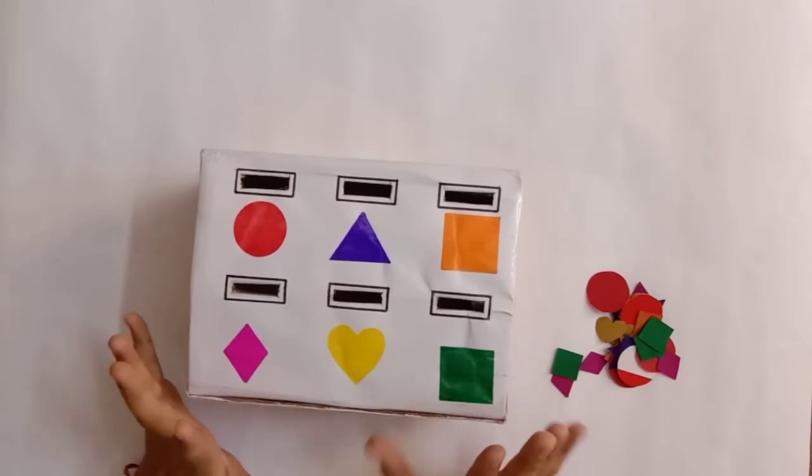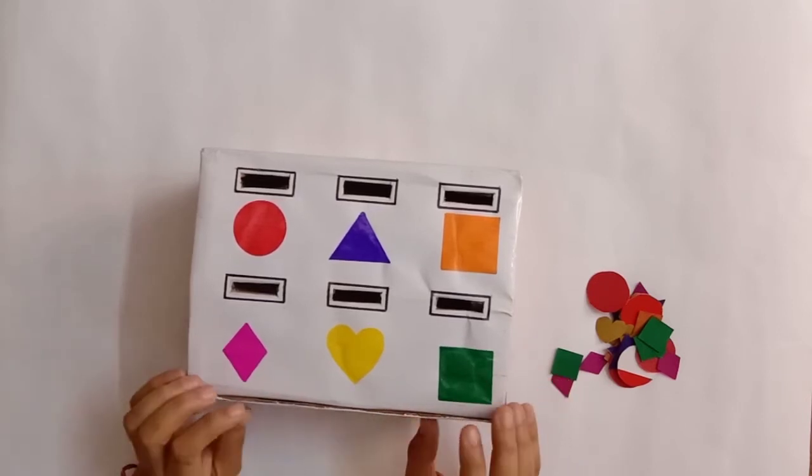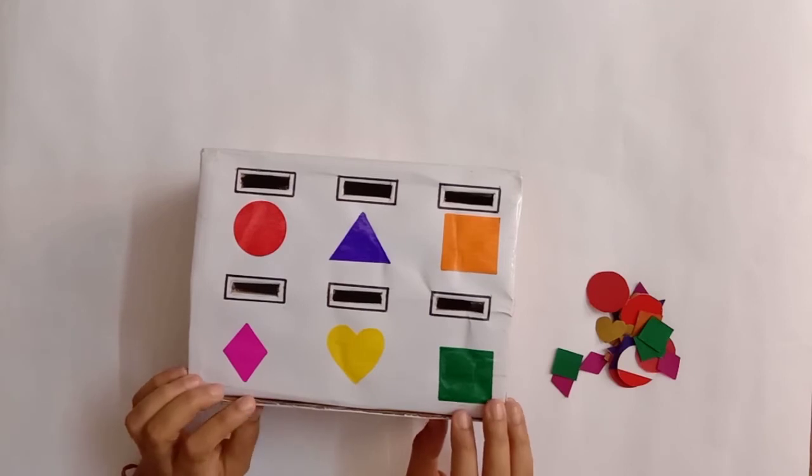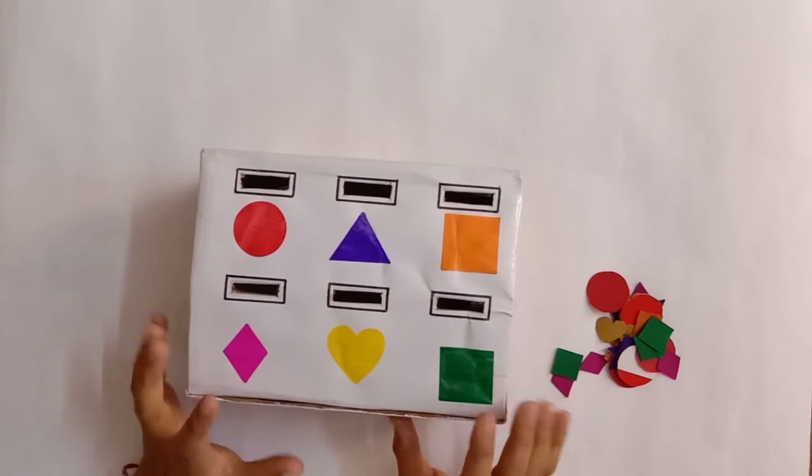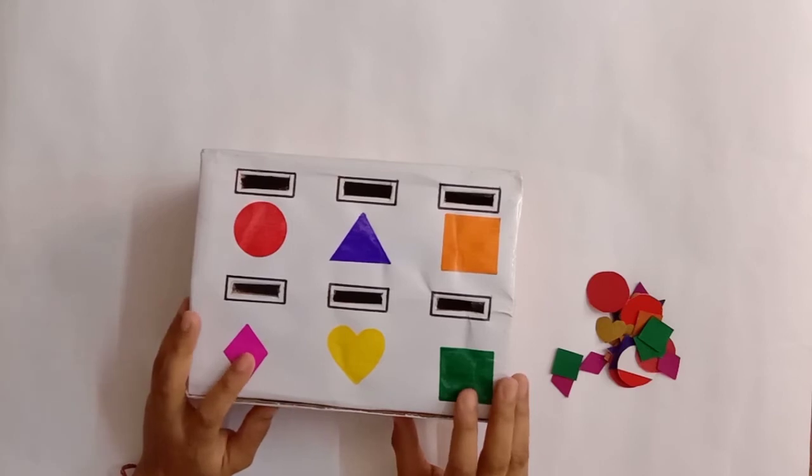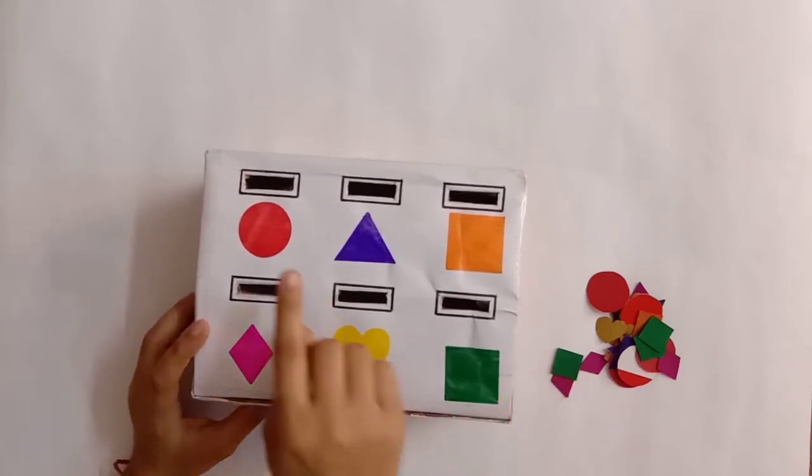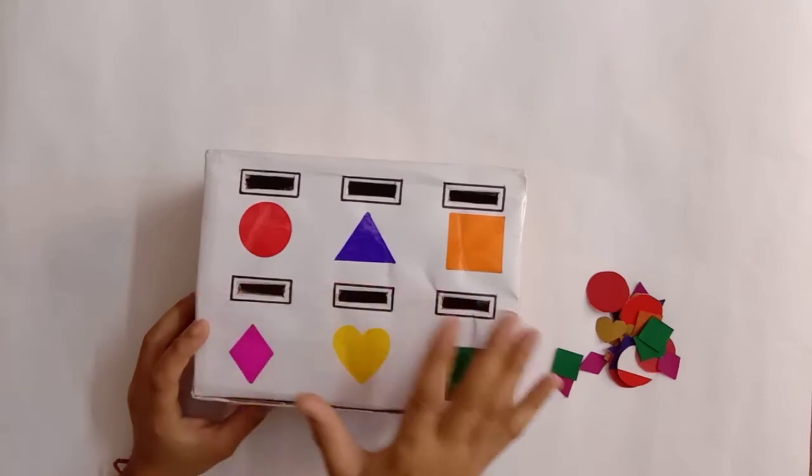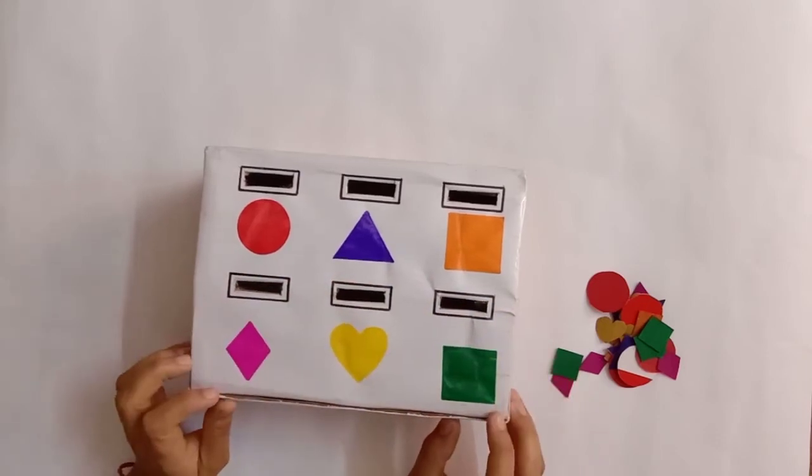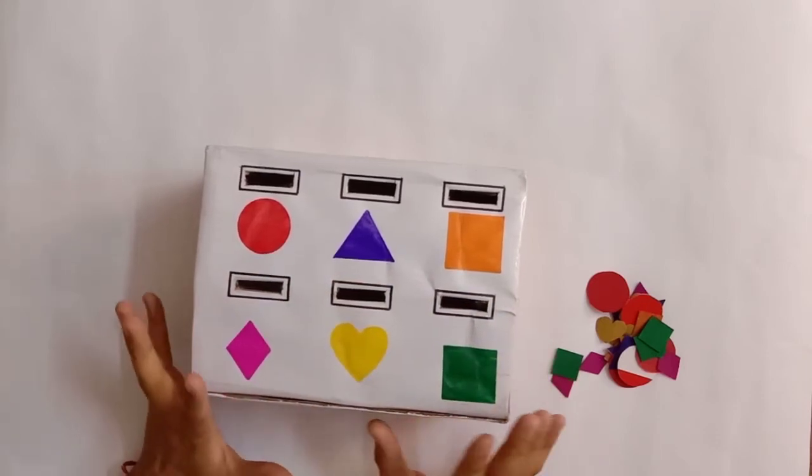To learn about shapes, colors, and of course it's a good activity for hand and eye coordination. When I had given this activity to Riange in the earlier stage he was little confused. He was putting circle into triangle and triangle into circle hole, but later on he did pretty well and now let's see how he's doing this one.